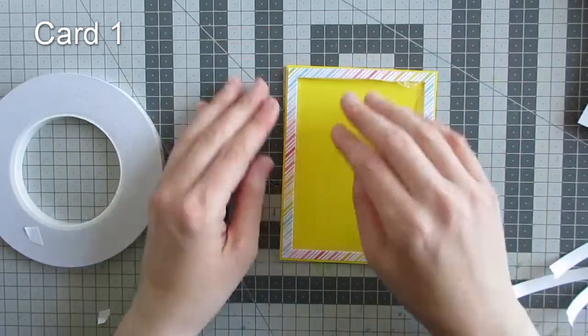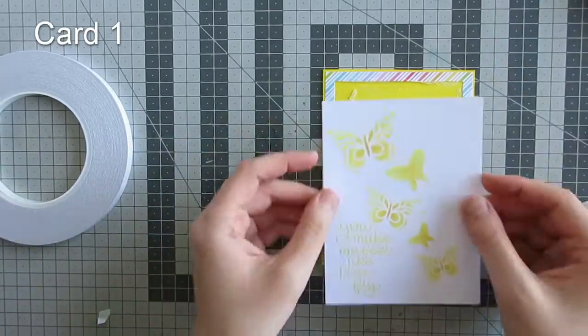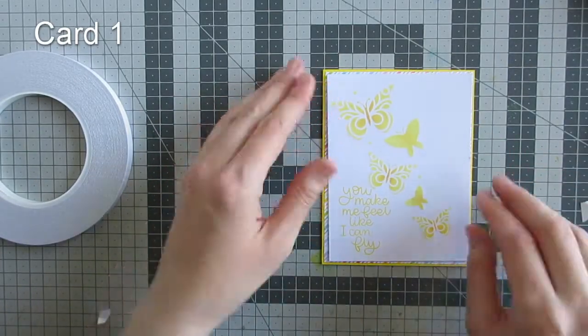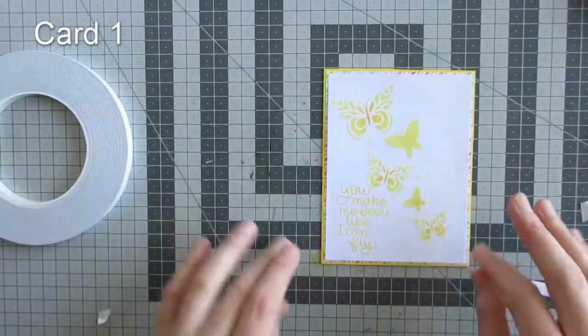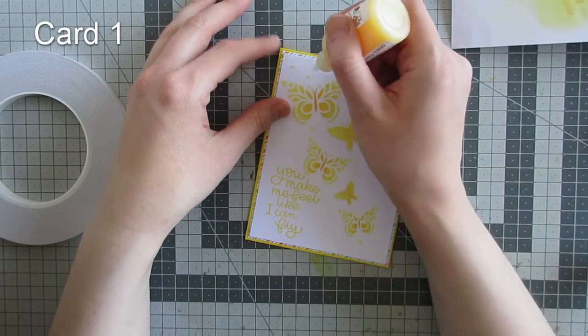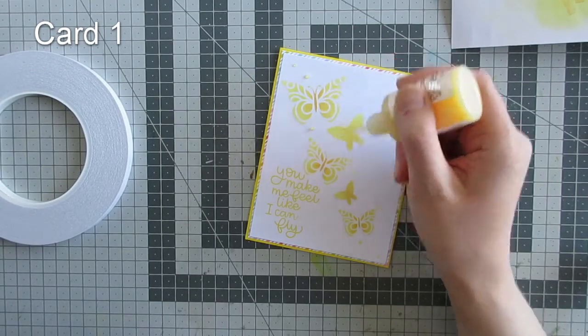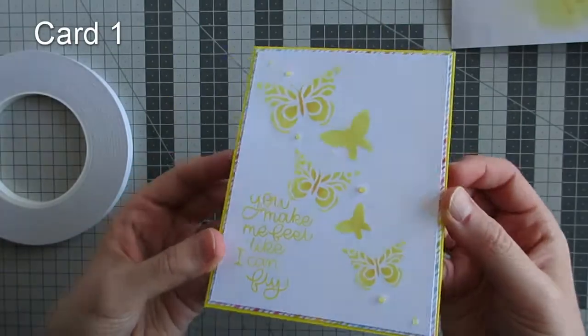I started assembling my card with a matting layer of patterned paper from the Lawn Fawn Really Rainbow paper pad. I cut away the center to use on a future card, adhered my panel over that layer, and then added Nouveau Drops in Limoncello over the ink-blended dots.